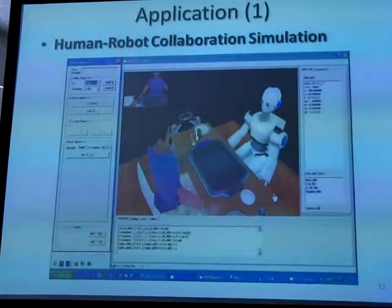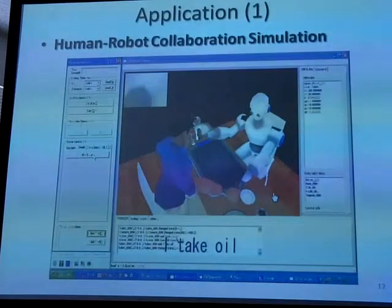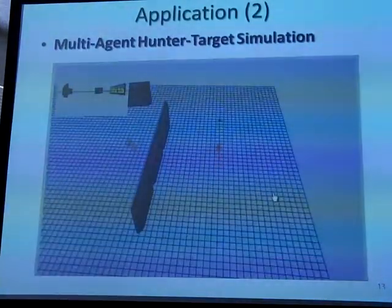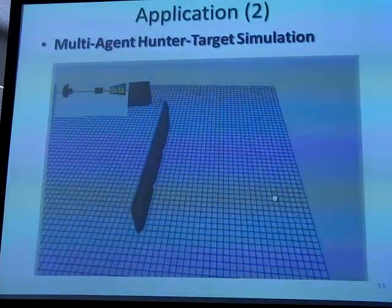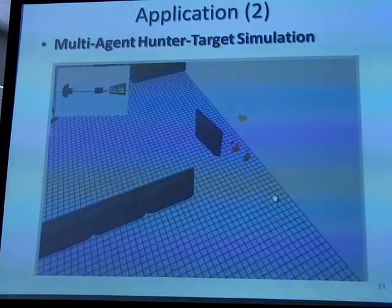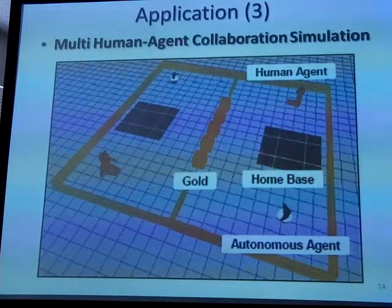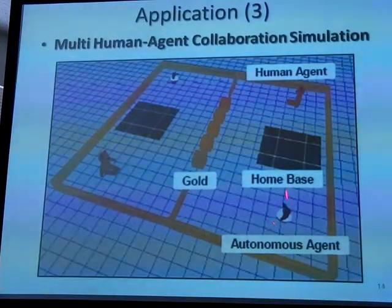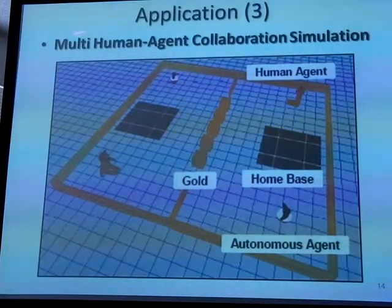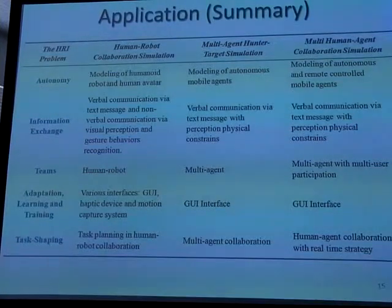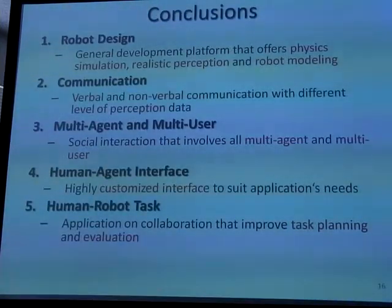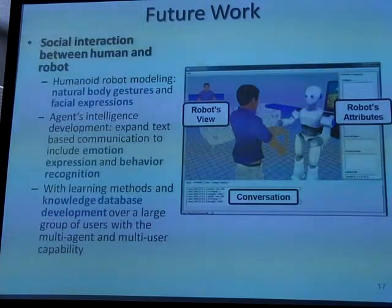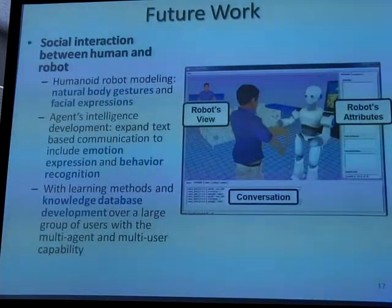Here are some examples we currently have. The first is the Okonomiyaki simulation. We also have the hunter-and-target scenario where two hunters try to catch a target. The third example has one side controlled by a human and the other by an autonomous agent, and they try to collaborate to perform tasks while competing with the other team. As a conclusion, we have achieved these five points targeting human-robot interaction applications. Future work includes realizing facial expression, natural body gesture, and making the platform into a full multi-user, multi-agent simulation platform.